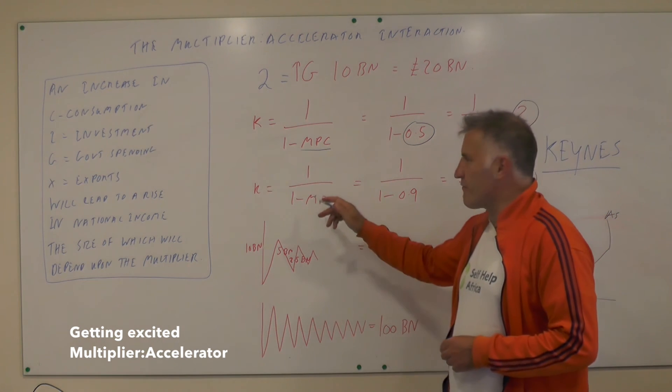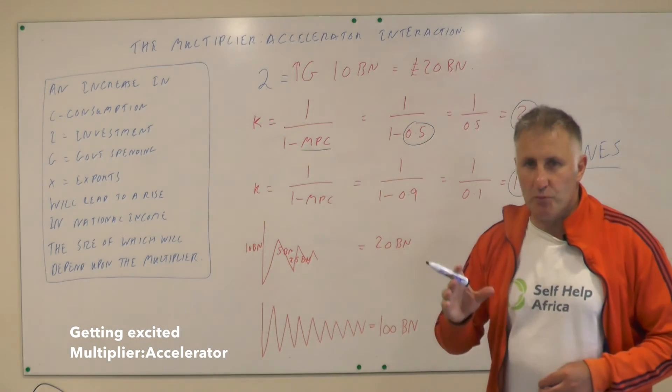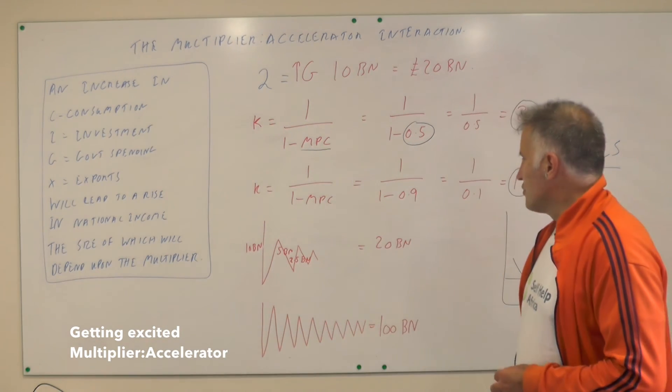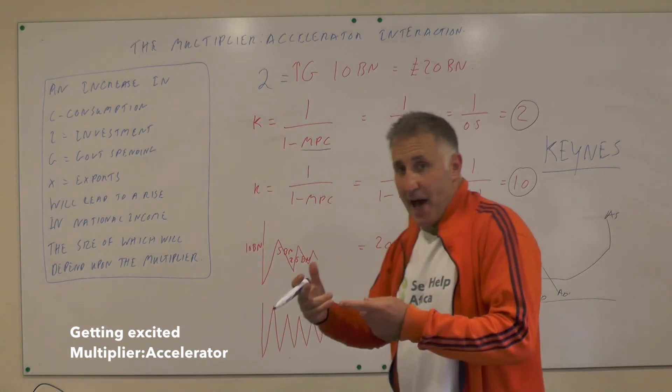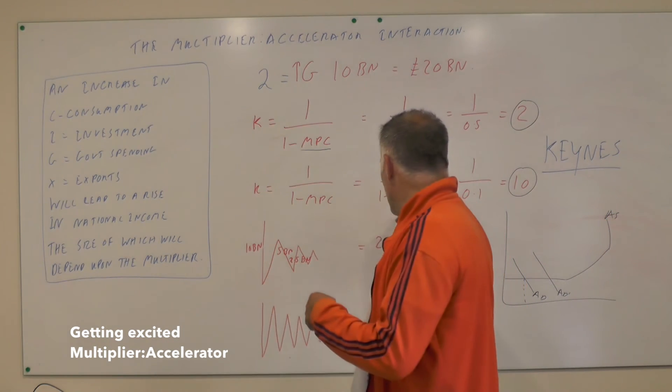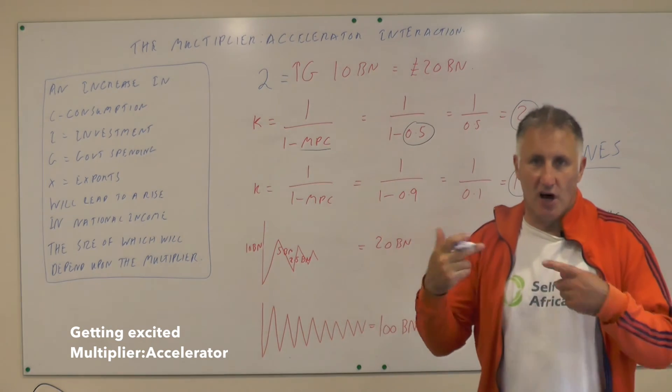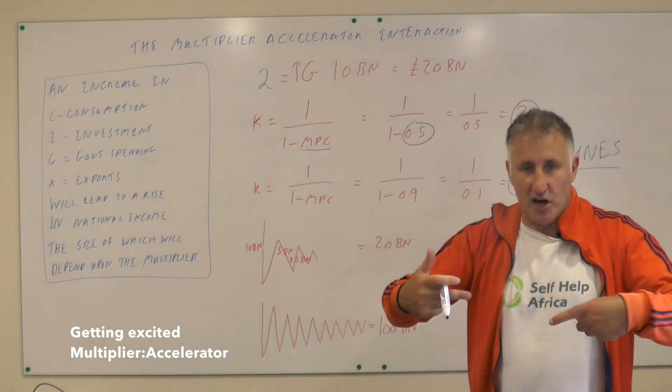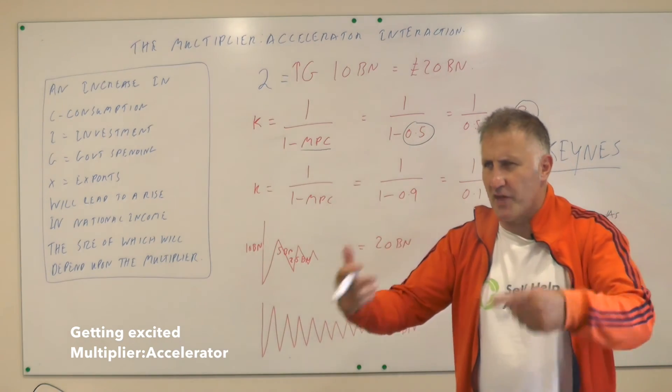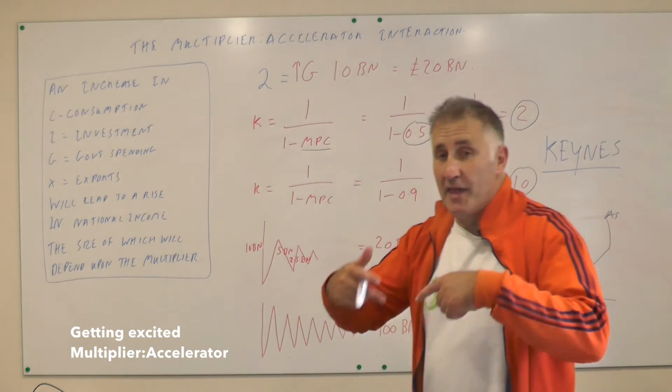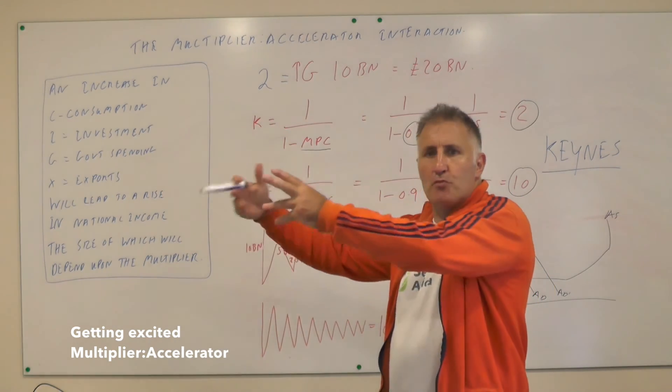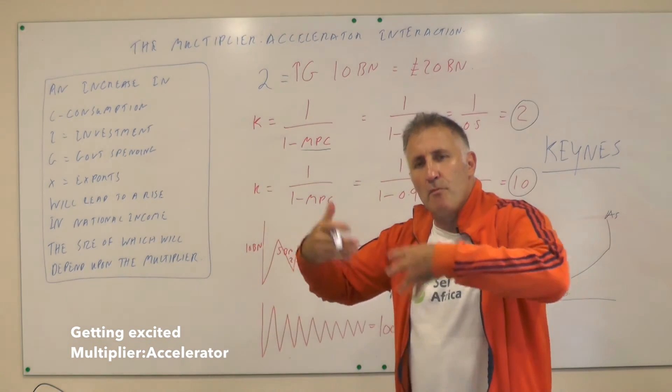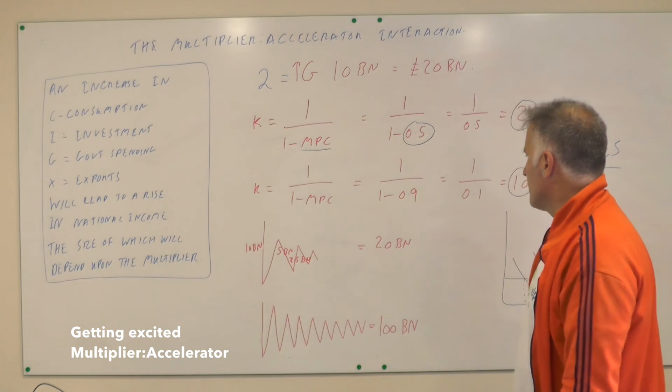However, if the multiplier is equal to ten, in this case we're assuming that people have a very high marginal propensity to consume. If you give someone a hundred pounds, they spend ninety percent of that, so they spend ninety quid. Someone else gets that ninety quid and they will spend ninety percent of that, which is 81 quid. The next people will spend ninety percent of the 81 pounds, which will be 72 pounds something, and the money goes round and round the economy.